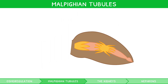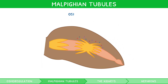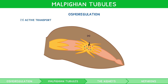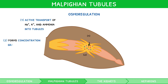So how do Malpighian tubules carry out osmoregulation? Active transport by lining cells of the Malpighian tubules moves sodium, potassium and ammonium from the haemolymph into the tubules. This creates a concentration gradient, drawing water in by osmosis.